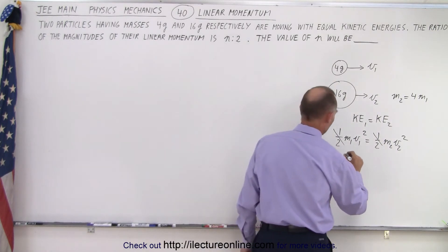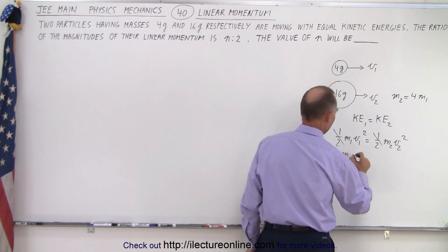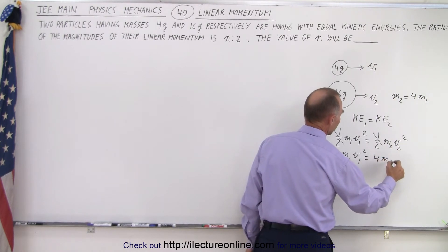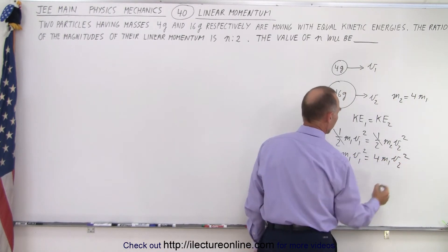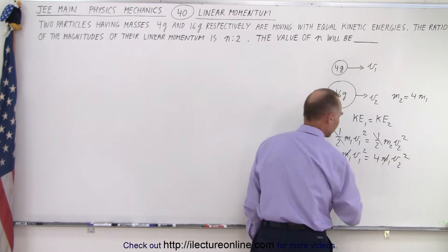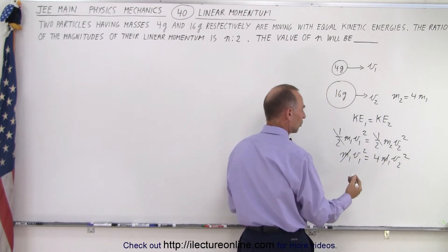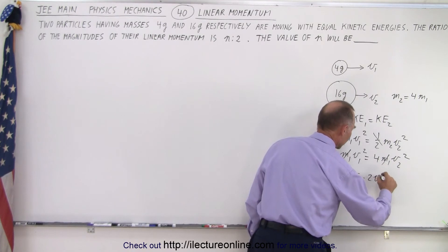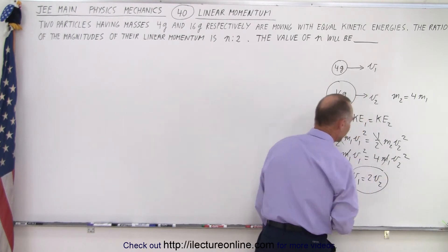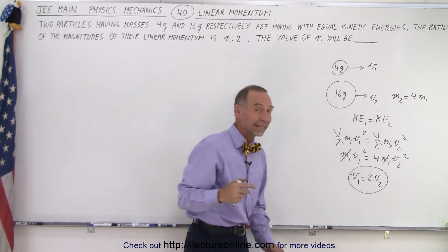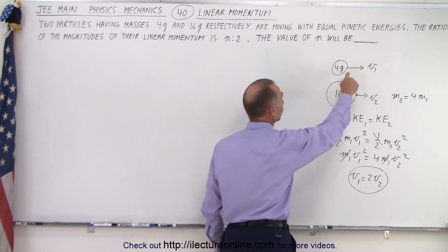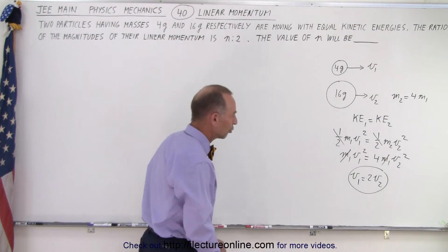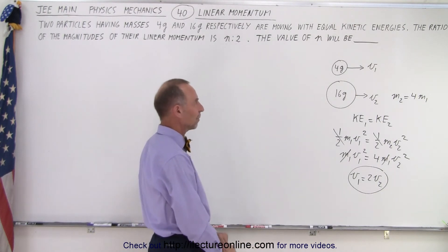So let's replace that in there. So we have m1 times v1 squared is equal to 4 m1 times v2 squared. And then the m1s cancel out. And then we take the square root of both sides and we get v1 is equal to 2 times v2. So that means that for them to have an equal kinetic energy, v1 must move twice as much or twice as fast as mass 2 or mass 1 should move twice as fast as mass 2.